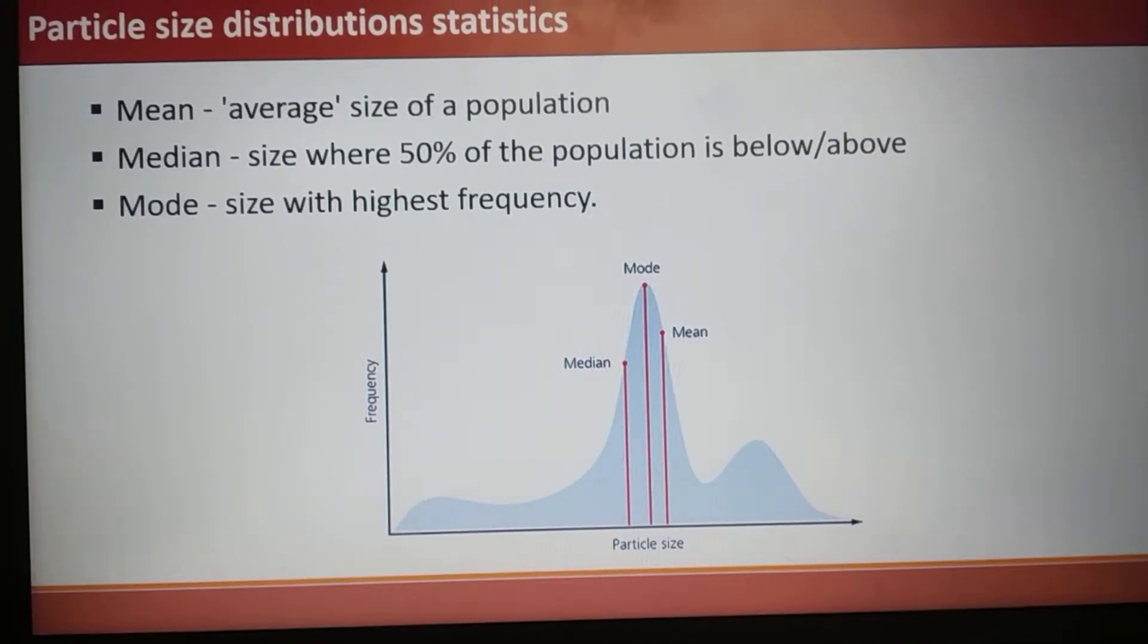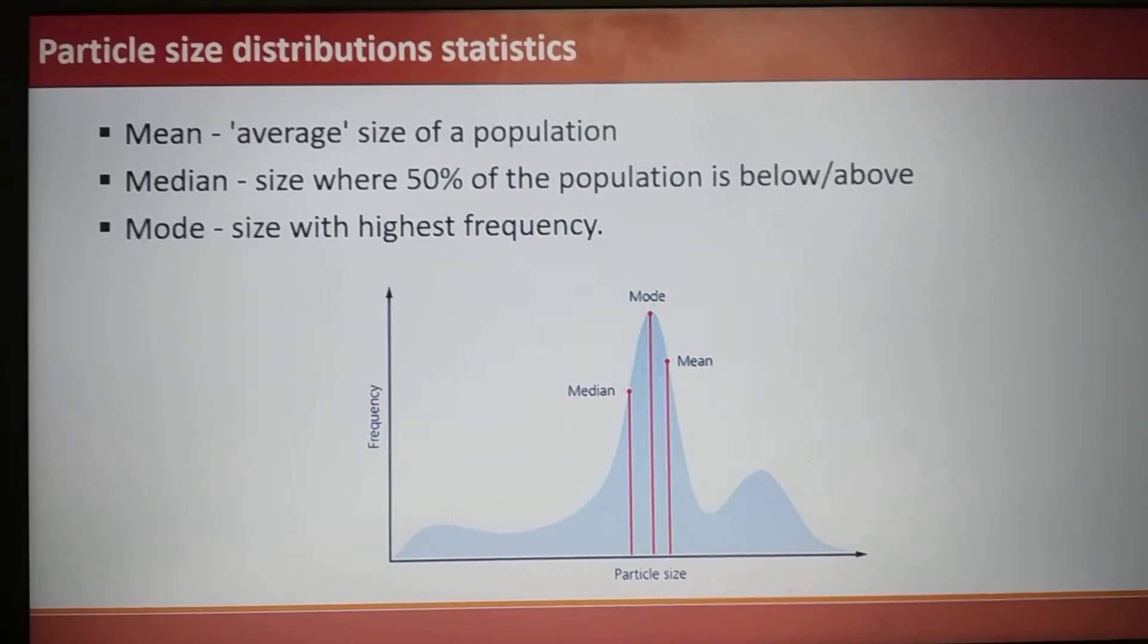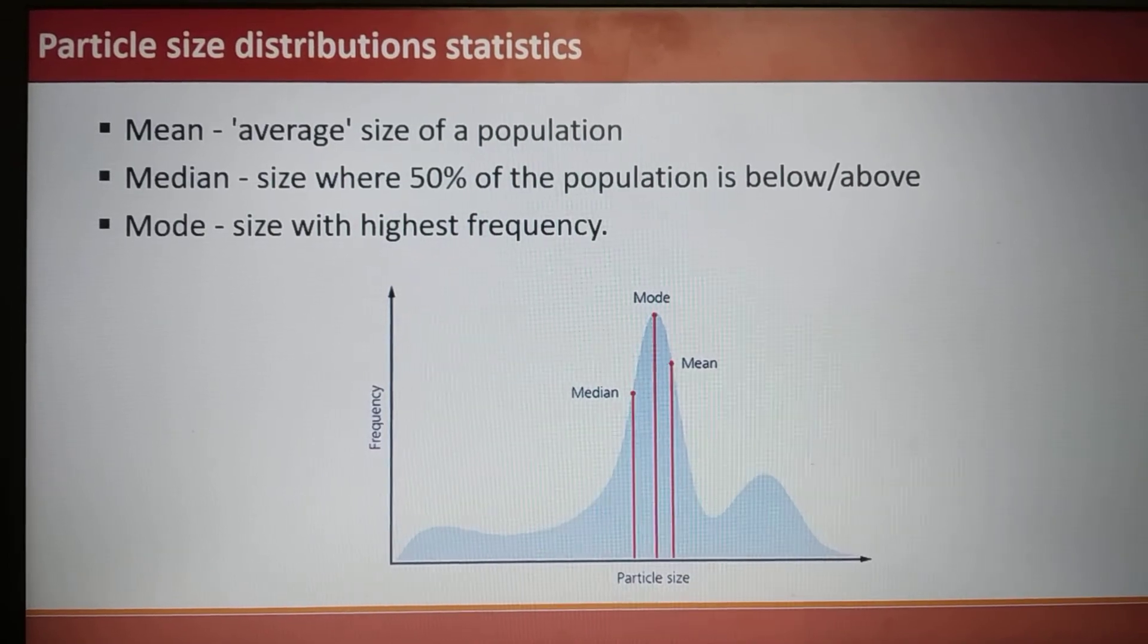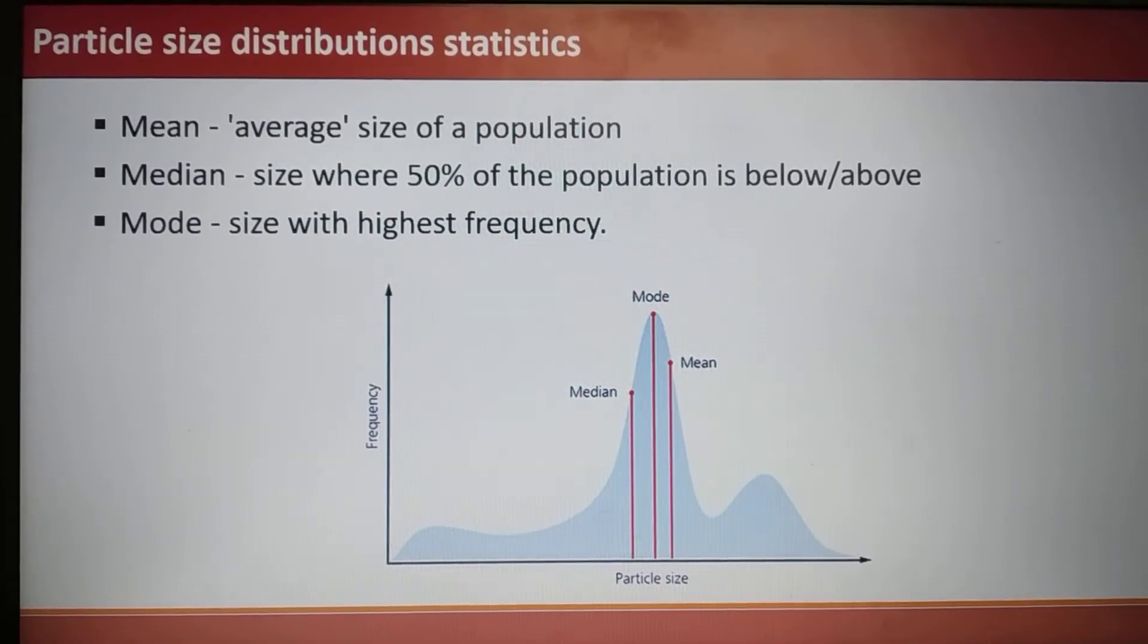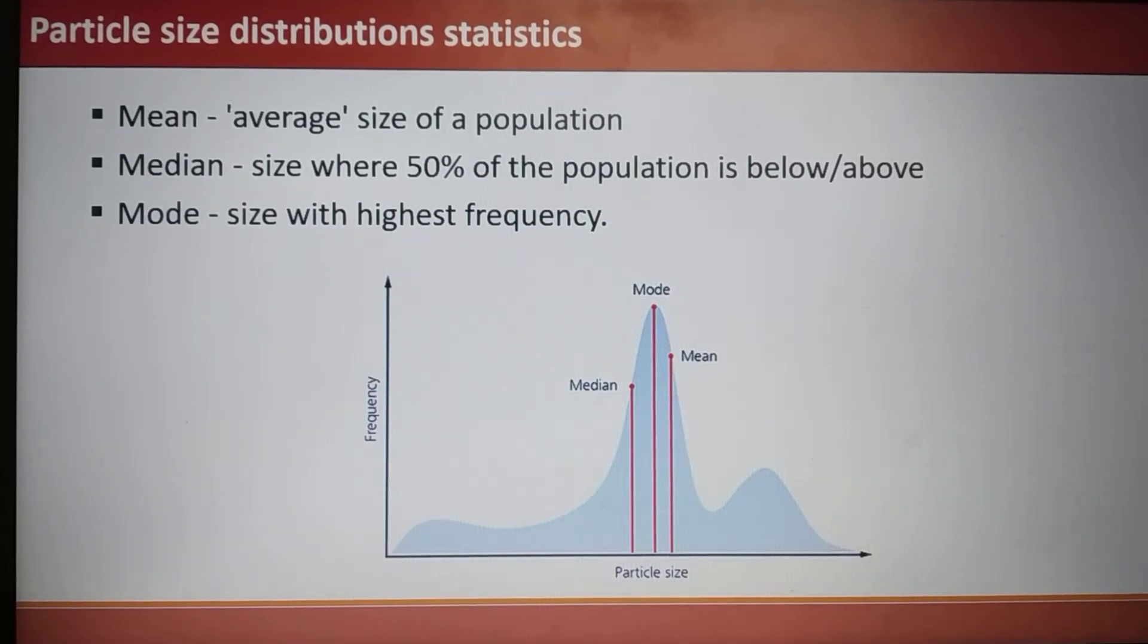Now, some statistics used in particle size distribution: Mean is the average of the population. Median is the particle size where 50% of the population is below or above that given size. Mode is the particle size with highest frequency.